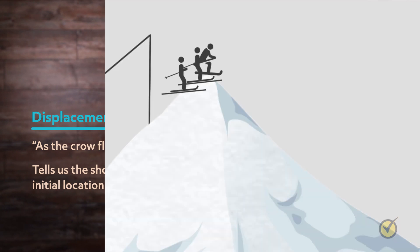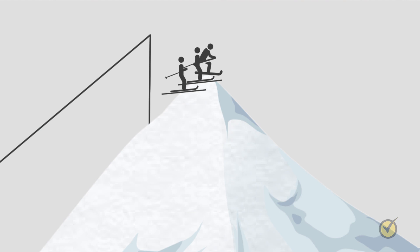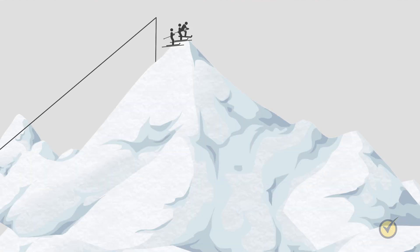Let's look at skiing for example. A group of skiers will start at the top of the mountain. One skier really likes adventure so she zigs and zags all around the mountain as she skis down the hill.